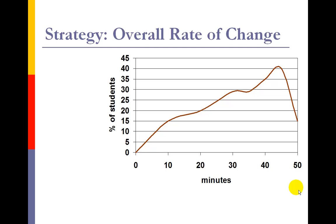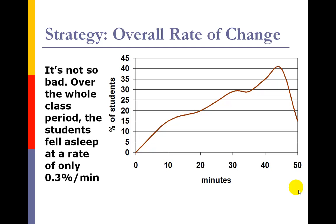So what graphically is looking like a bad situation, maybe the professor can pull something out of the hat. Now one of the things to do is look at something called the overall rate of change. And the professor can say, wait a minute, it's not so bad because over the whole class period from time zero to time 50, students were falling asleep at a rate of only 0.3% per minute.